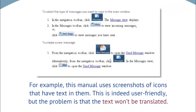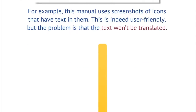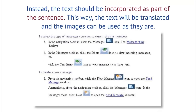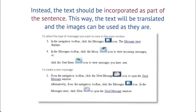For example, this manual uses screenshots of icons that have text in them. This is indeed user-friendly, but the problem is that the text won't be translated. Instead, the text should be incorporated as a part of the sentence. This way, the text will be translated and the images can be used as they are.